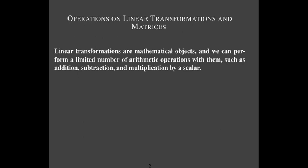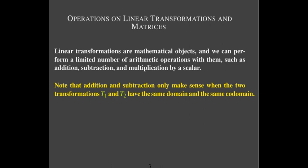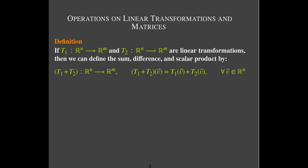With most mathematical objects, we can do some kind of arithmetic with them — certainly some sort of addition, subtraction, and in our case, we can multiply them by a scalar as well. Addition and subtraction of two linear transformations only makes sense when they take inputs from the same space and give outputs in the same space. In other words, they have to have the same domain and the same codomain.